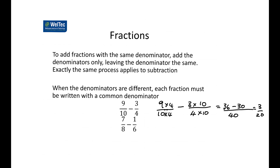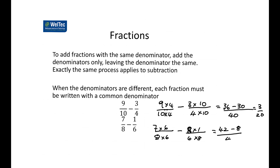For 7 over 8 minus 1 over 6: the common denominator is 48 (6 times 8). The 8 is multiplied by 6, so 7 must be multiplied by 6 to give 42. The 6 is multiplied by 8, so 1 must be multiplied by 8 to give 8. That gives 42 minus 8 over 48, which is 34 over 48, simplified to 17 over 24.